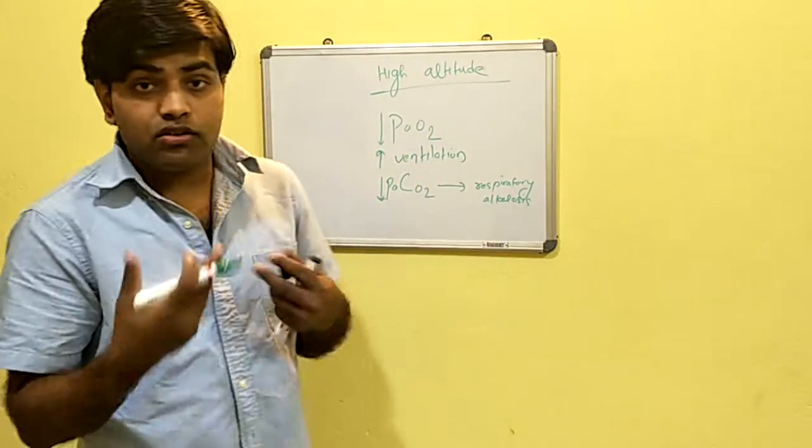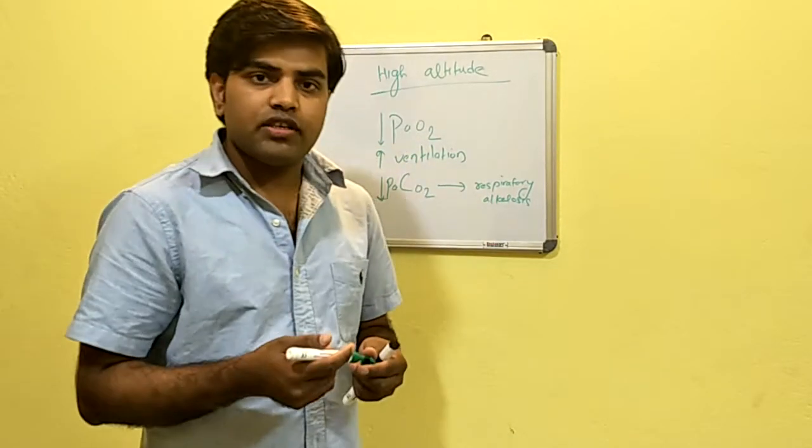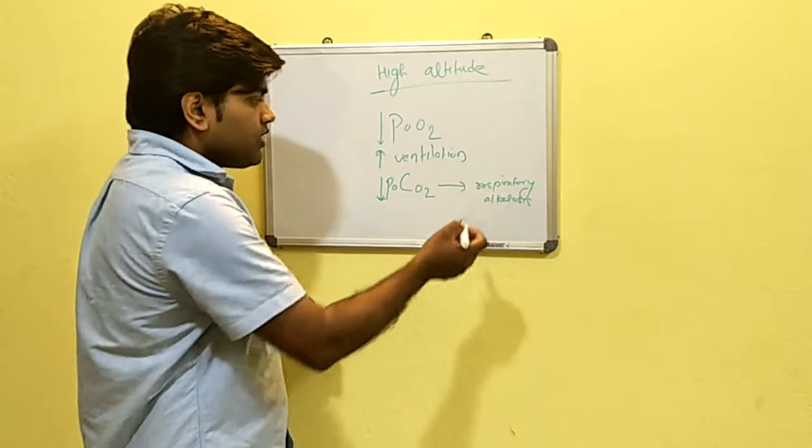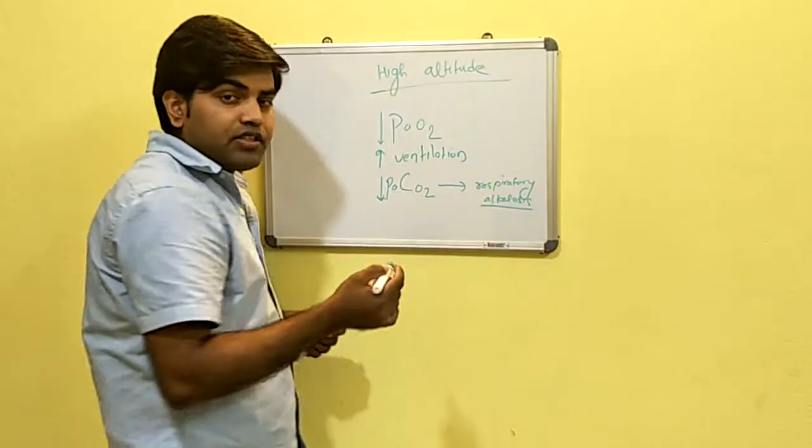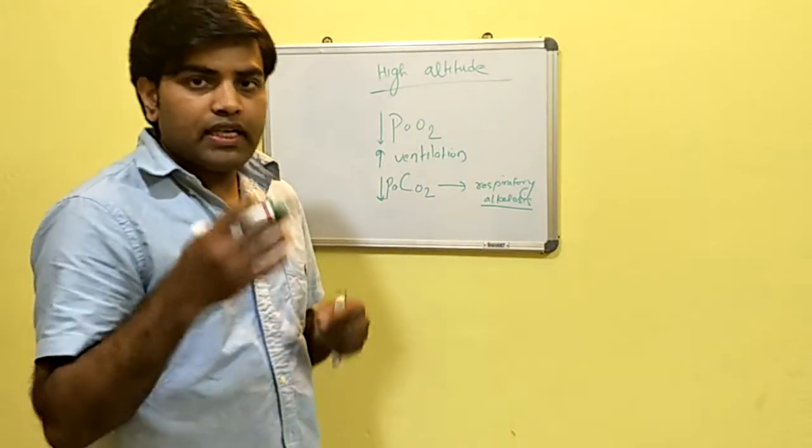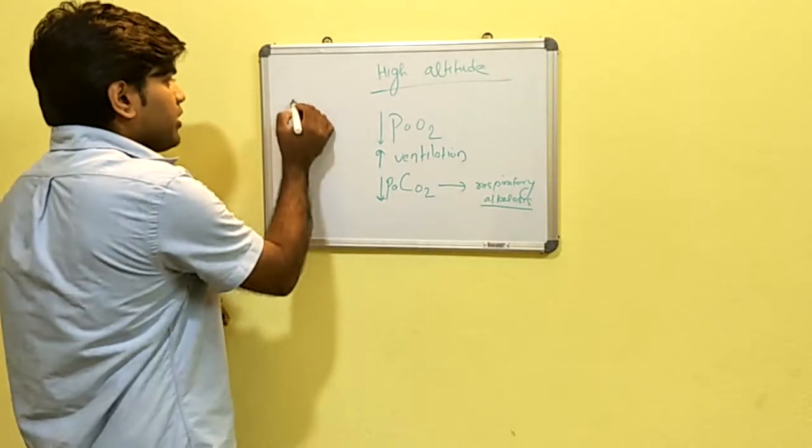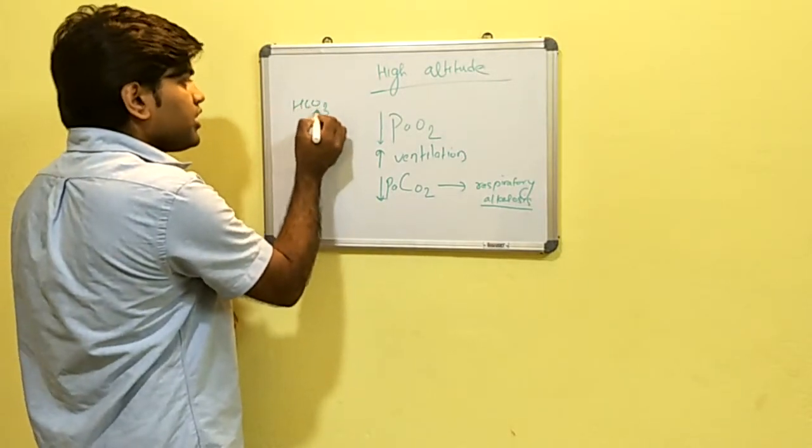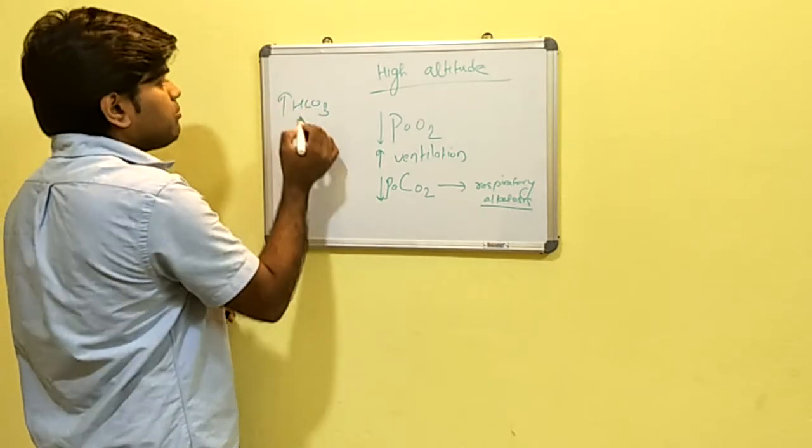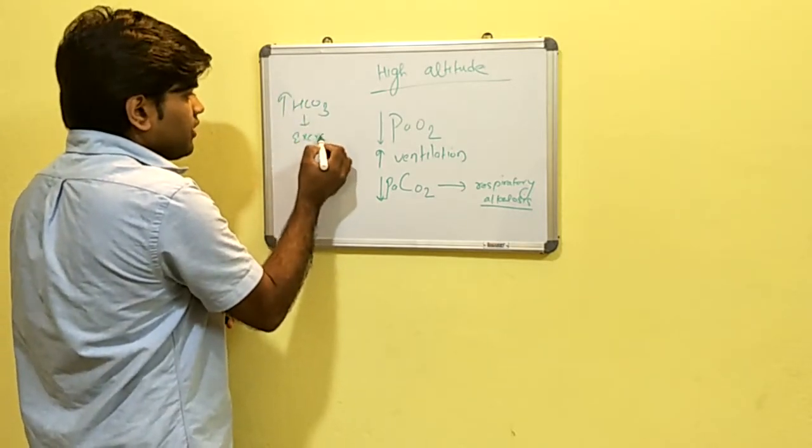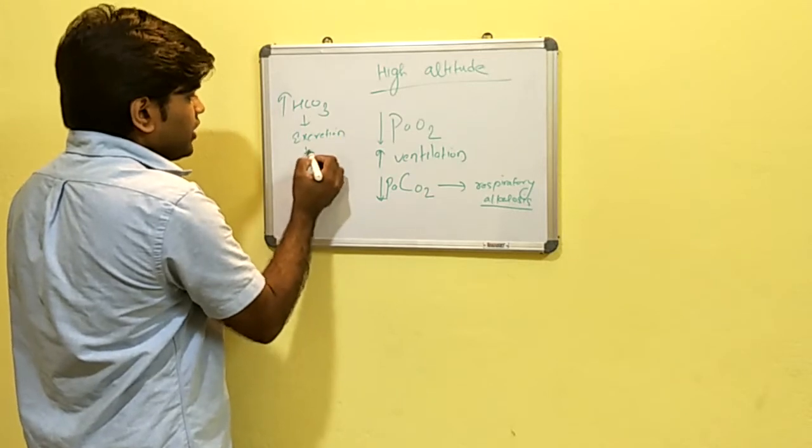Since our body has alkalosis, it again tries to compensate. For maintenance of the pH in the body, it will try to excrete the alkaline ion from our body, that is bicarbonate through kidney. So there will be increased bicarbonate excretion through kidney.